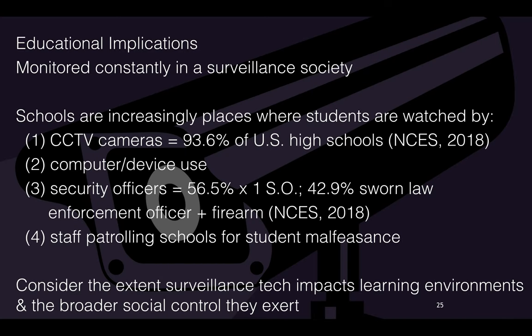Finally, surveillance implications for education. We are monitored constantly in a surveillance society, and schools are increasingly places where students are watched by a variety of actors. CCTV cameras: 93.6% of U.S. high schools have them as of 2018. Computer and device use can be monitored. Security officers: 56.5% of schools have at least one, and 42.9% of sworn law enforcement officers in schools carry a firearm. Staff also patrol schools for student malfeasance. All of these are ways students are being watched, raising questions about how surveillance technology impacts learning environments and broader social control.